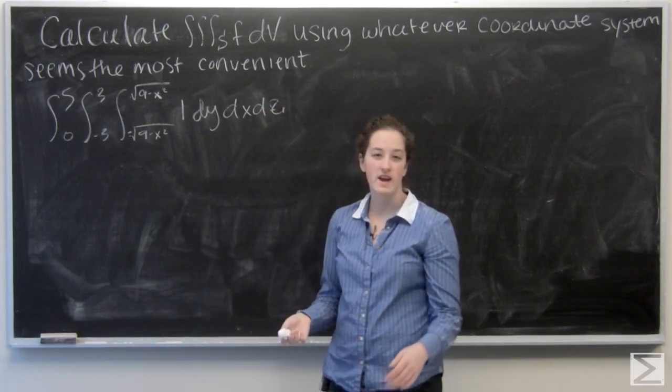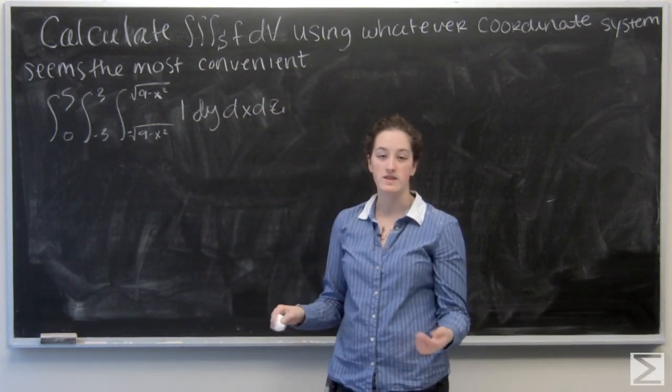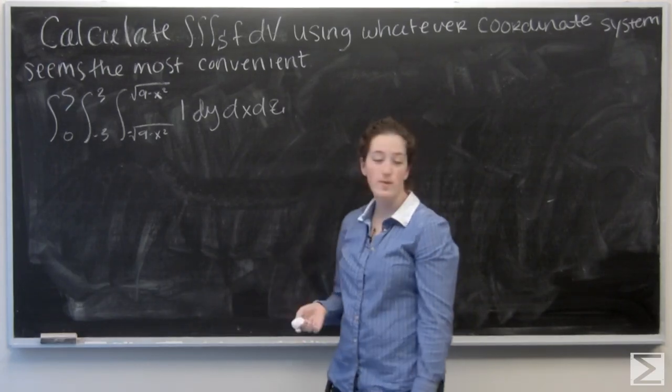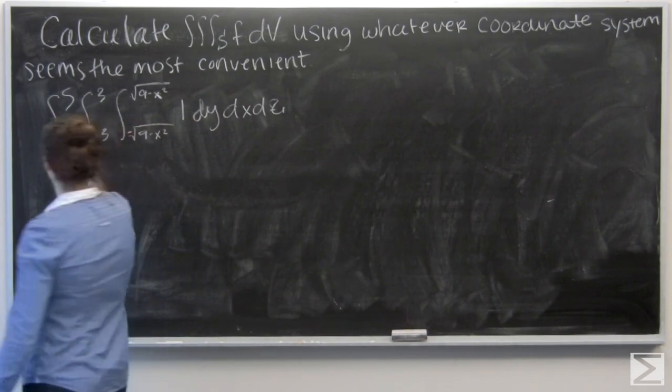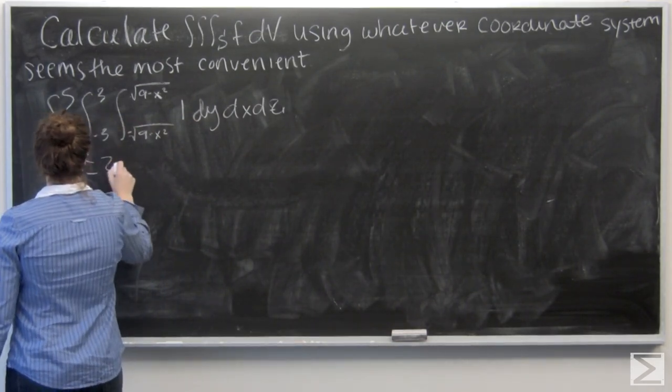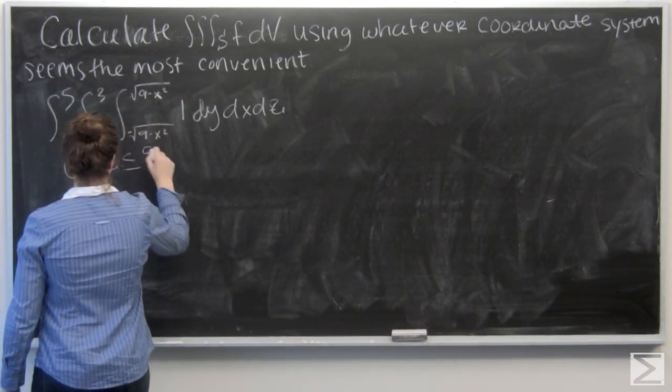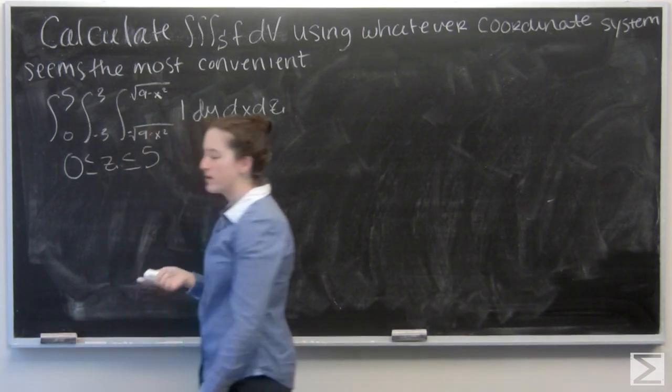So for cylindrical coordinates, I have theta, r, and z. So my z bounds from zero to five aren't going to change. Next, let's think about r.